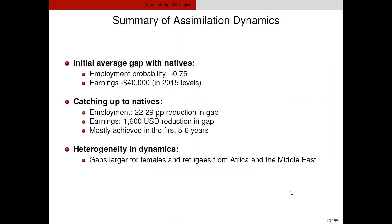Refugees start with a very large gap on employment — almost zero employment — while the average native has about a 75 percent employment rate. They start with a gap of 75 percentage points in employment and $40,000 in earnings, and they catch up but only in a limited way — maybe to 30 percentage points in employment and a couple of thousand dollars in income. Most of this is achieved in the first five to six years. The most disadvantaged groups seem to be refugees from Africa and the Middle East, and women refugees.